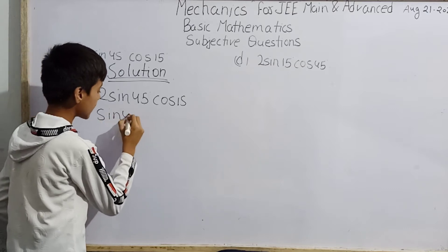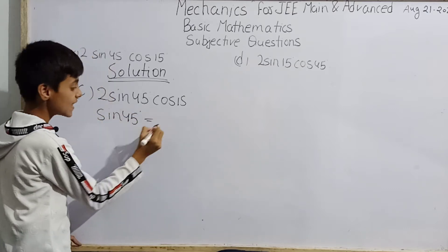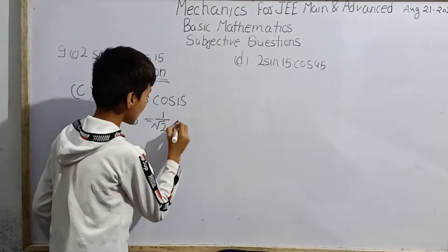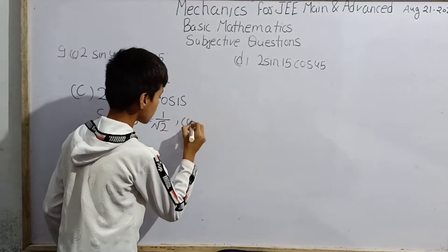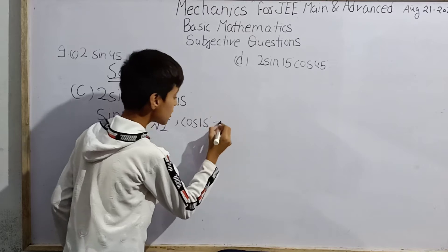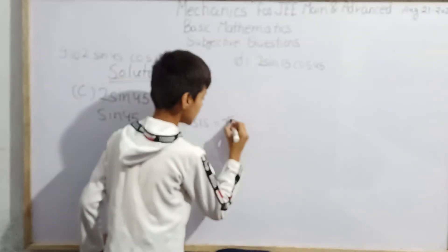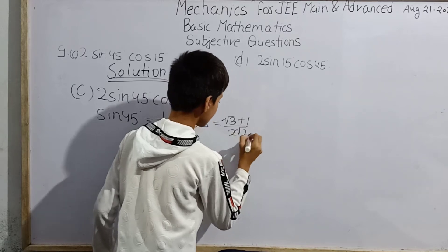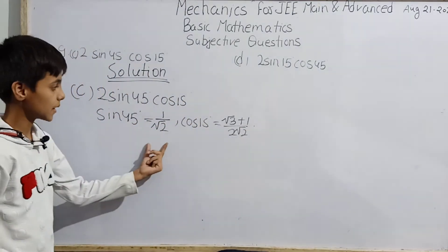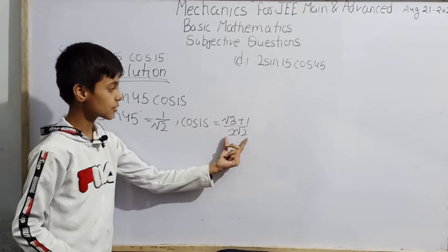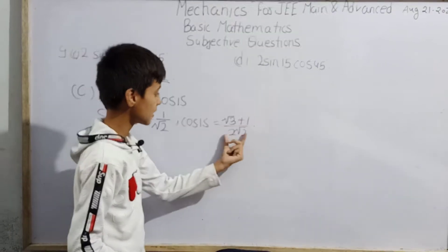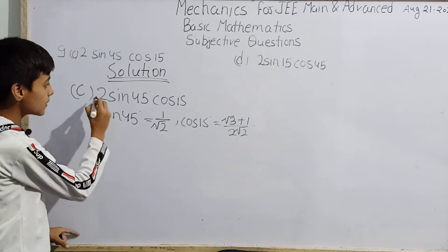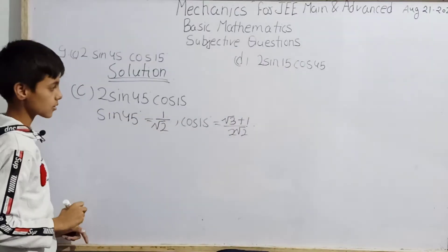The value of sin45° is 1/√2, and the value of cos15° is (√3 + 1)/(2√2). So sin45° = 1/√2 and cos15° = (√3 + 1)/(2√2).